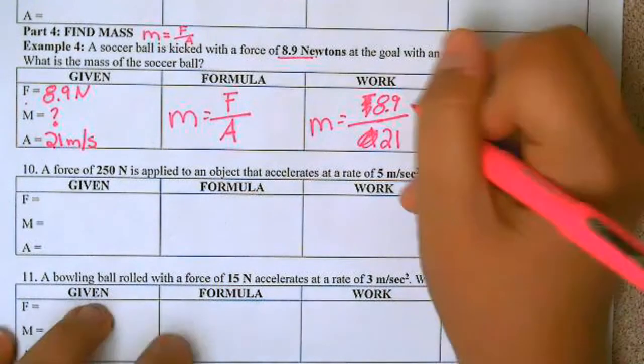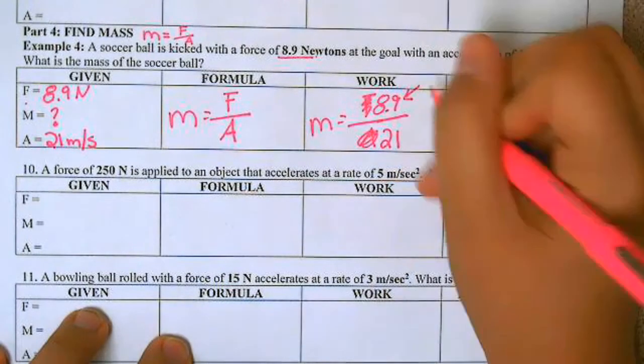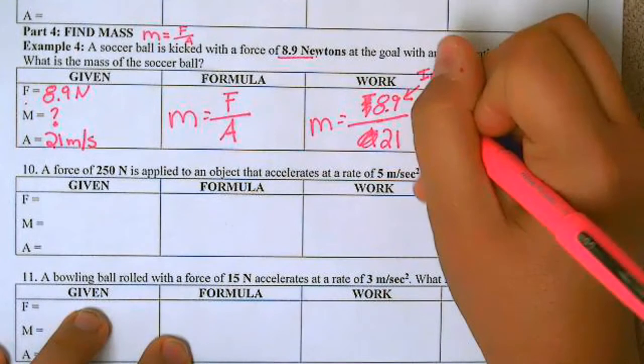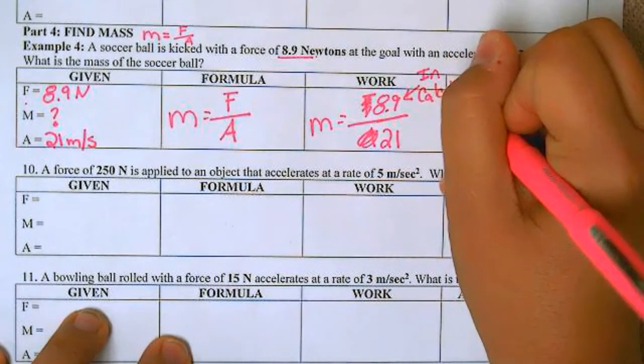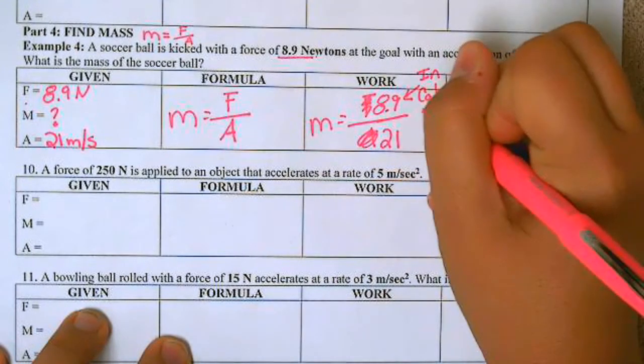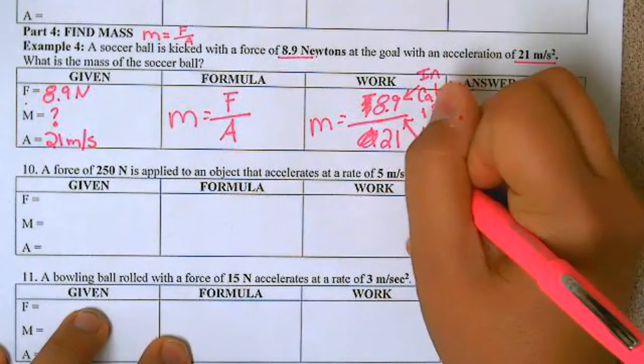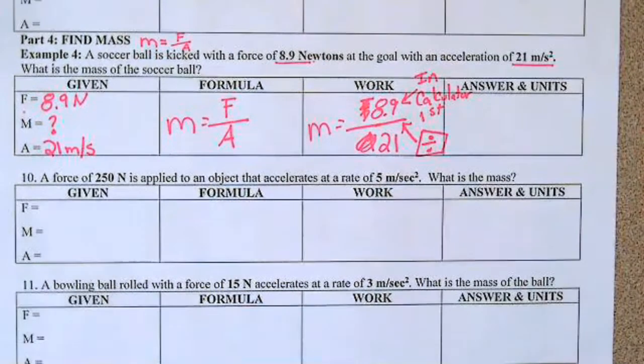So again, when we do this, whatever's in the top is going to go in your calculator first. And this line means to divide. So in my calculator, I'm going to push 8.9 divided by 21.